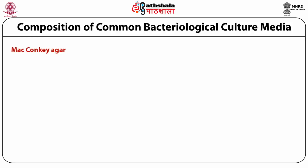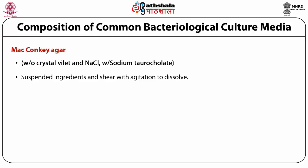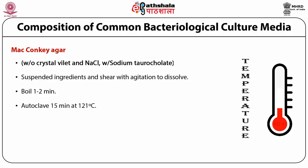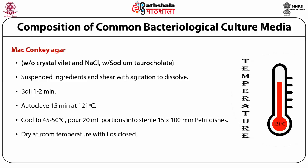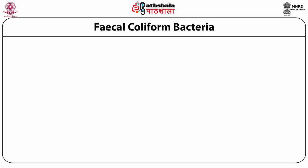The MacConkey Agar medium uses crystal violet and sodium chloride (sodium deoxycholate). Suspend the ingredients and heat with agitation to dissolve, then boil for 1–2 minutes and autoclave for 15 minutes at 121°C. Cool to 45–50°C and pour 20 ml portions into sterile 15×100 mm Petri dishes, then dry at room temperature with closed lids. The final pH is 7.1 ± 0.2.